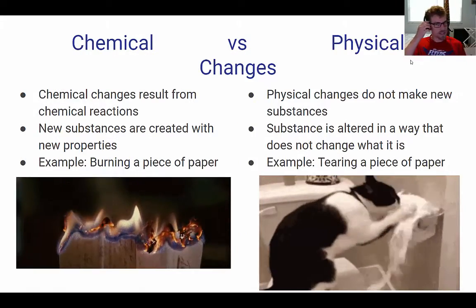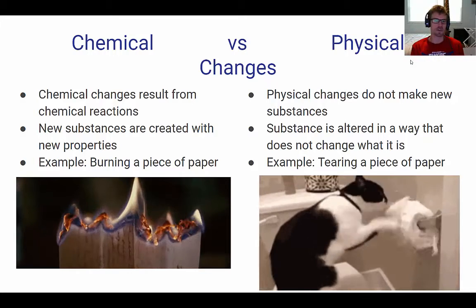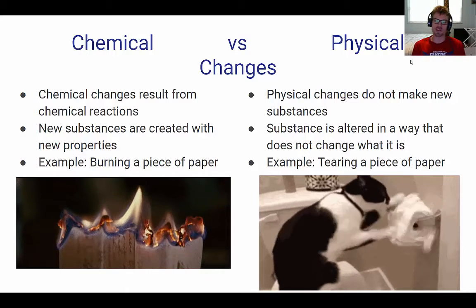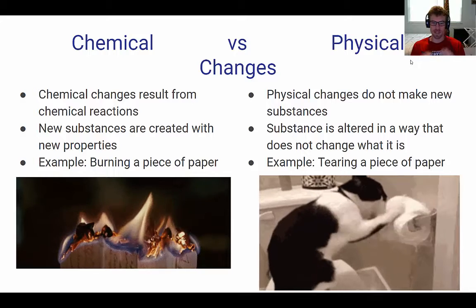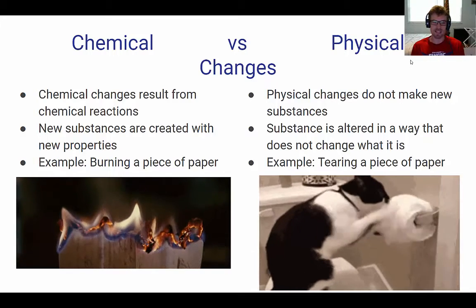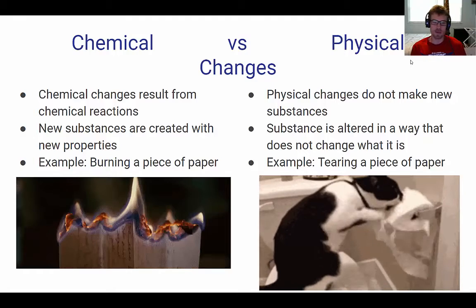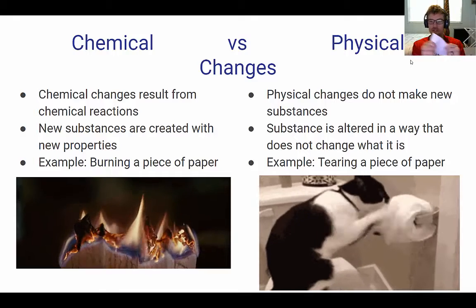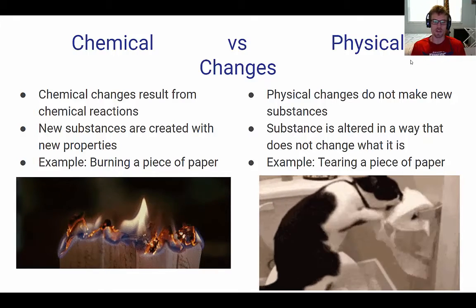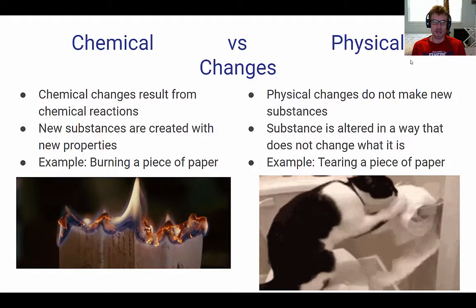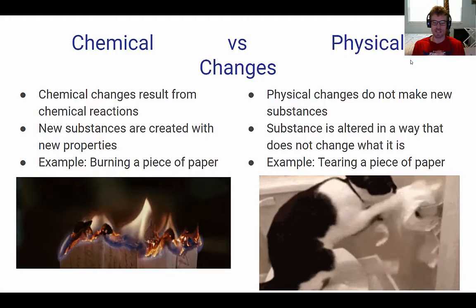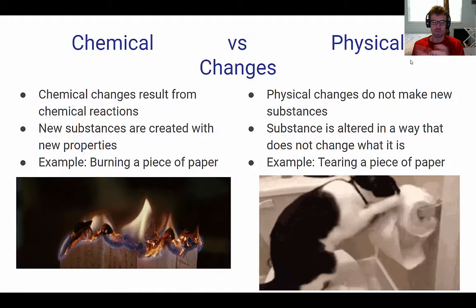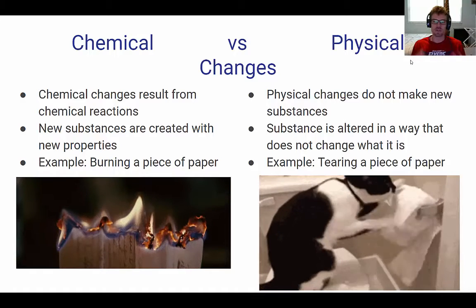There are two main types of changes that can occur: chemical changes or physical changes. Chemical changes are what result from chemical reactions — we're creating some new substance. We're fundamentally altering what that substance is, and the new substance has new properties. For example, burning a piece of paper: paper has specific properties — it's white, you can write on it, it has some structure. But after you burn it, it turns into ash, which has a different color, a different texture, and you can't write on it. We're making something with new properties.